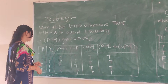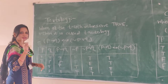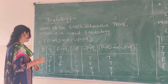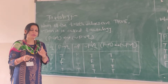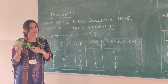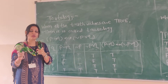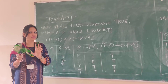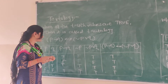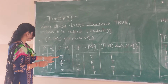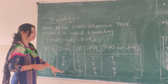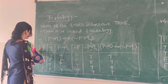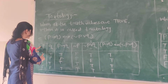The p and q values are T, T, F, F and T, F, T, F respectively. For p tends to q, that is the conditional statement — when the first value is true and second value is false, you get false; otherwise all values are true. So p→q gives: T, F, T, T. Then find out negation of p, which gives: F, F, T, T.